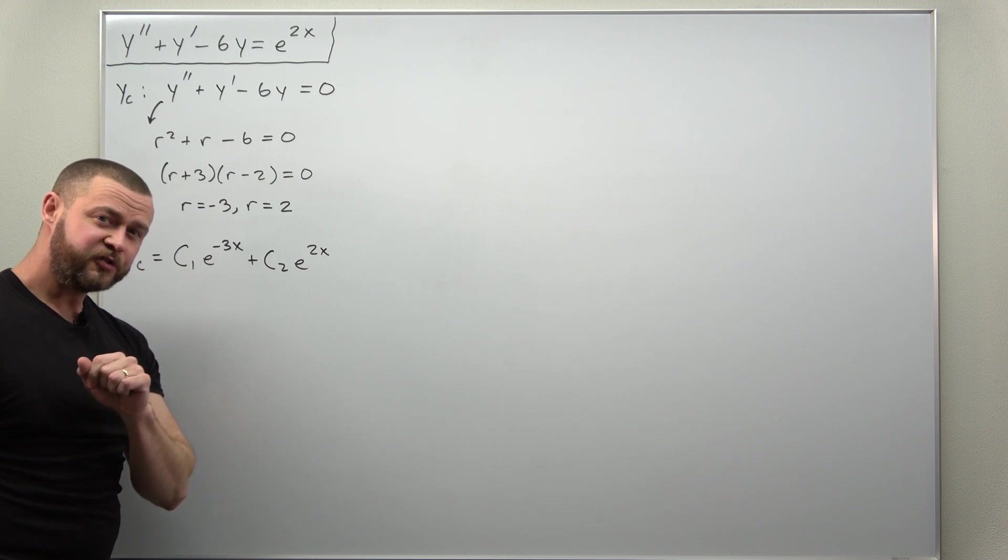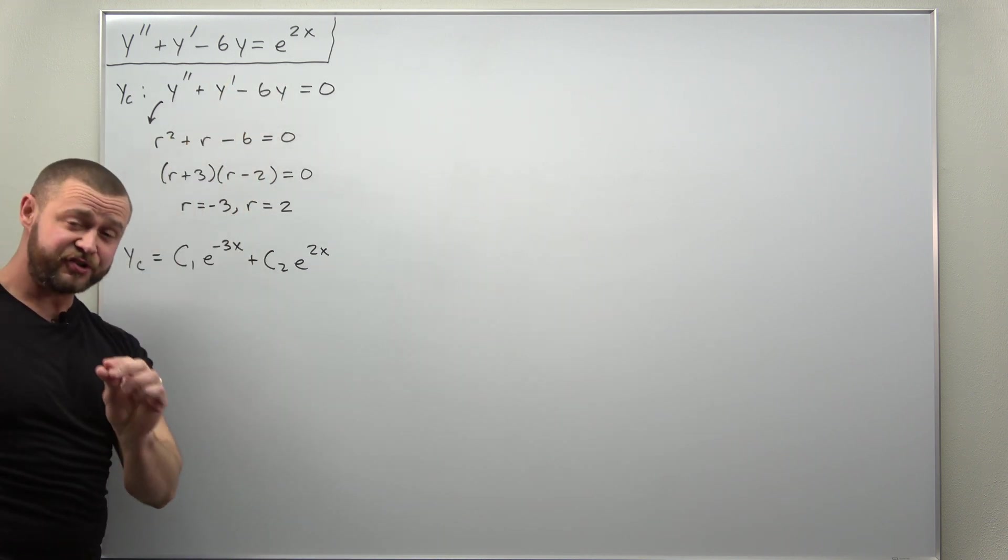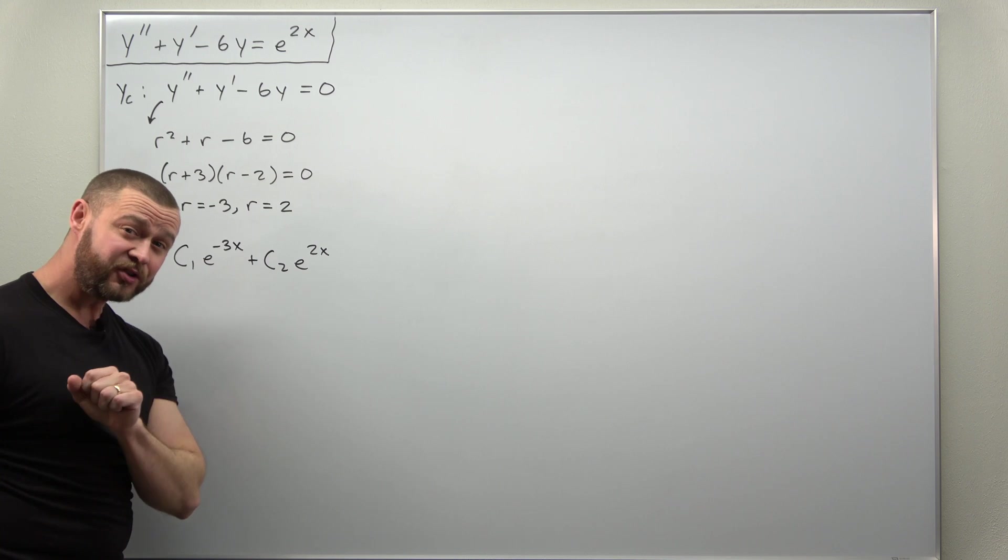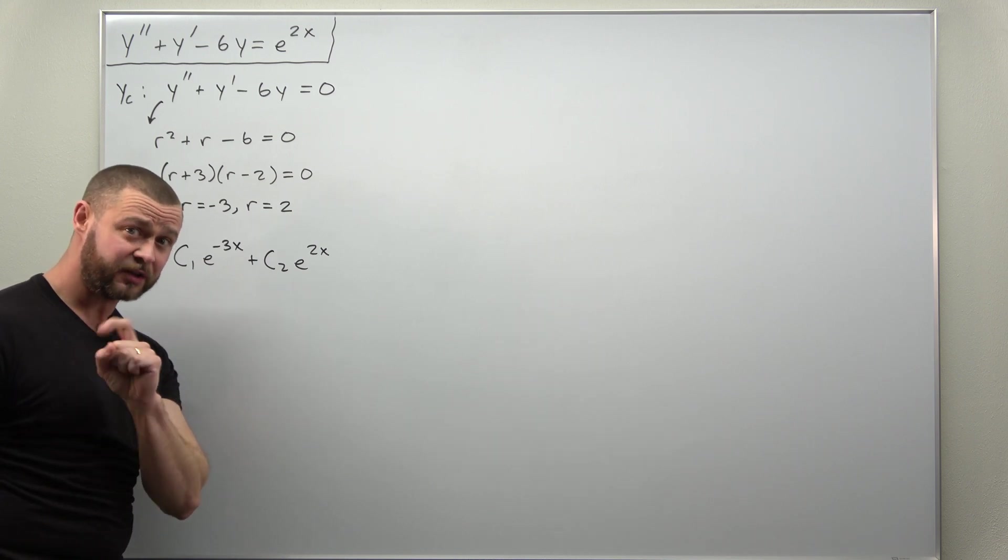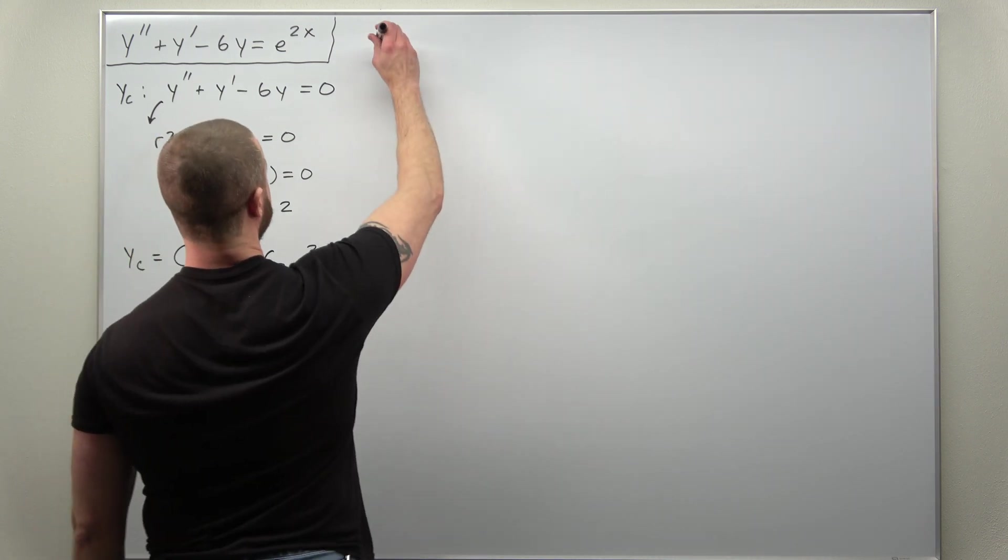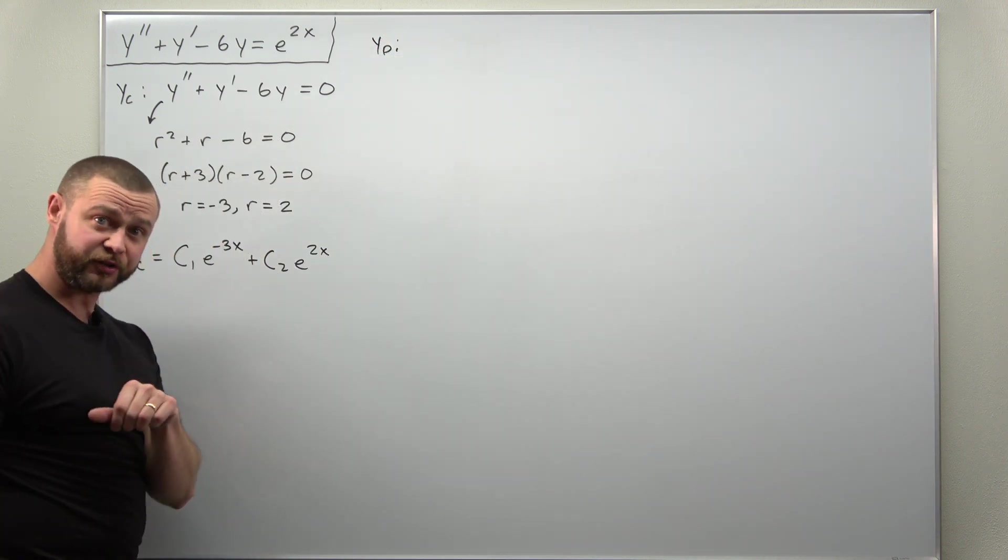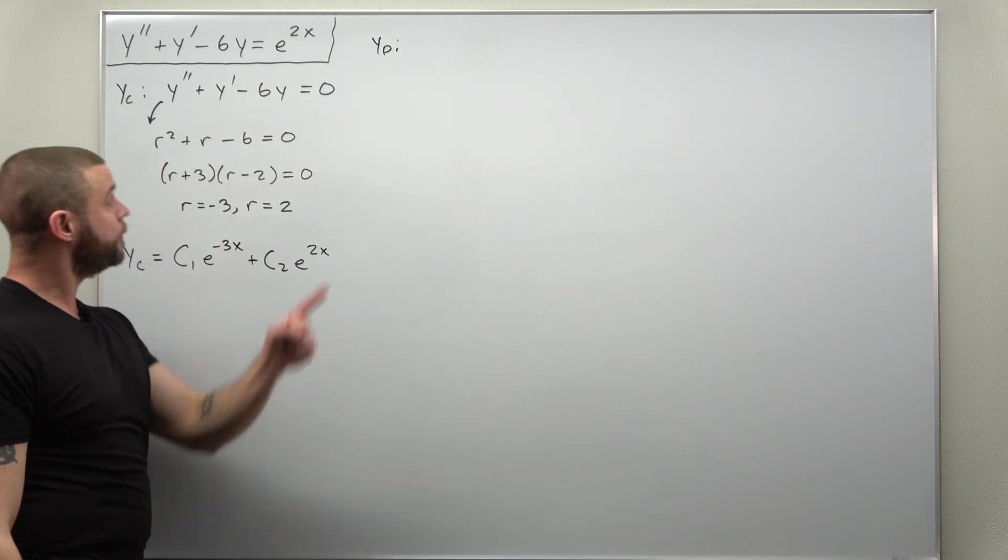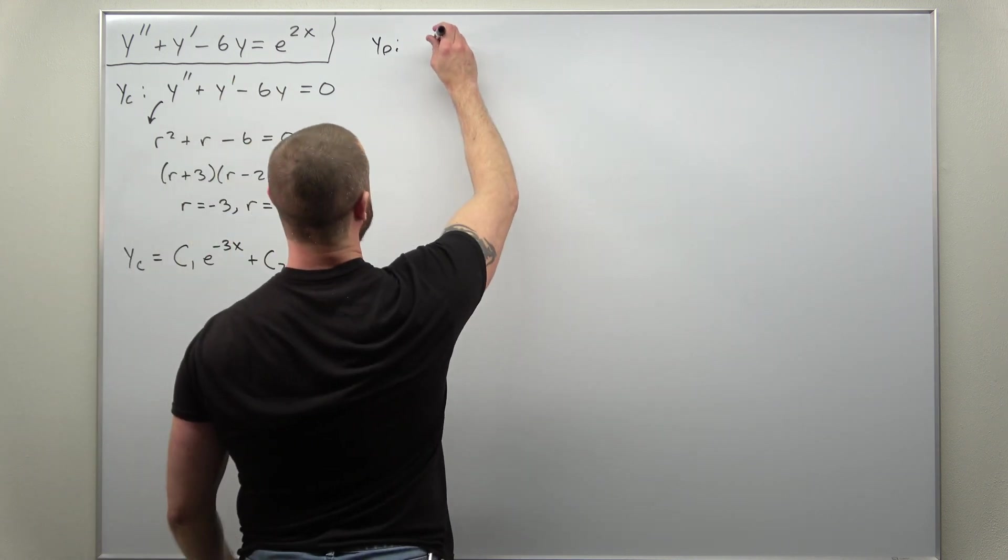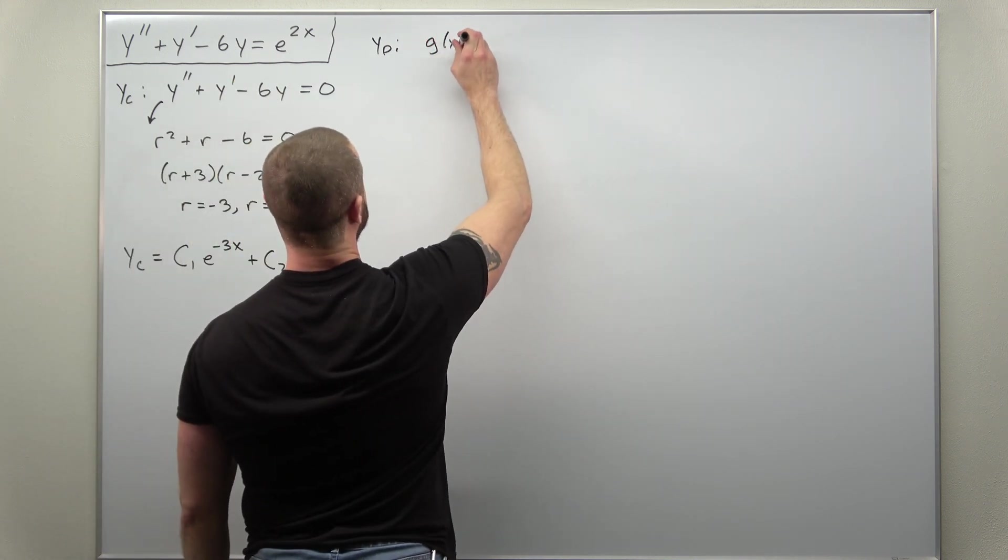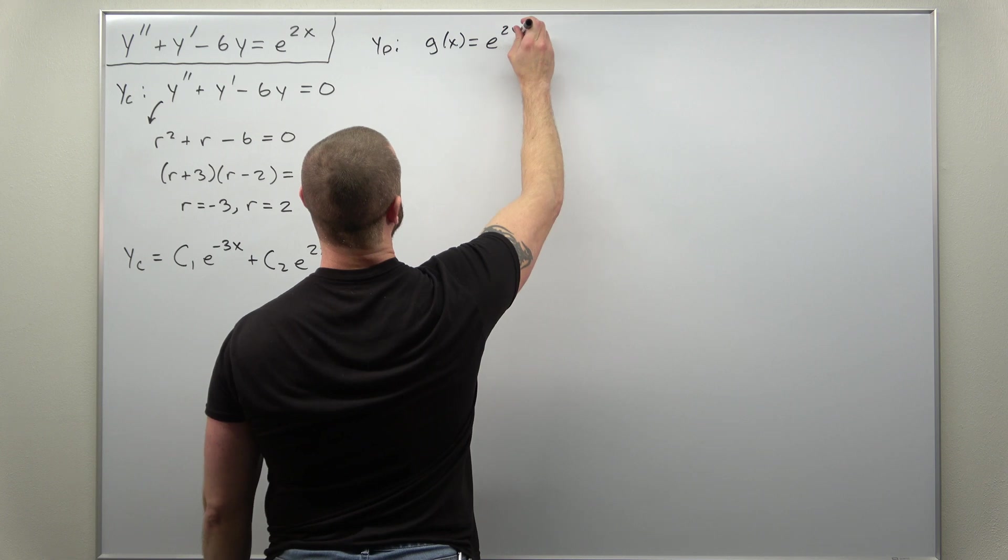Now let's point out what this right-hand side, that g(x), would indicate to us for our first choice for the particular solution. So if we go now to finding the particular solution as usual, start with the non-zero right-hand side, which is e^(2x).